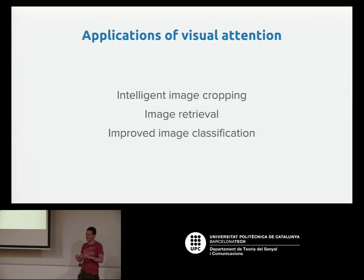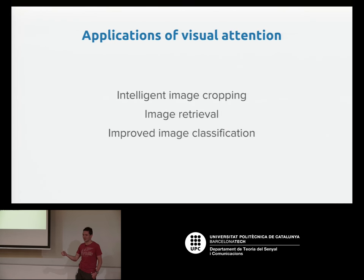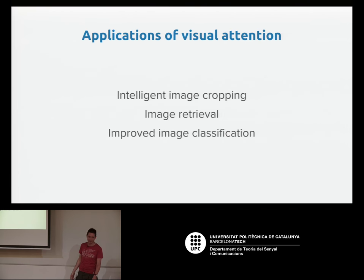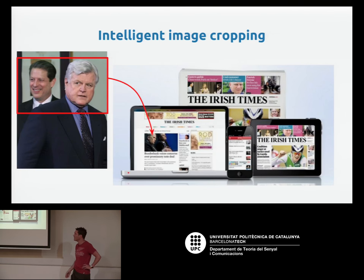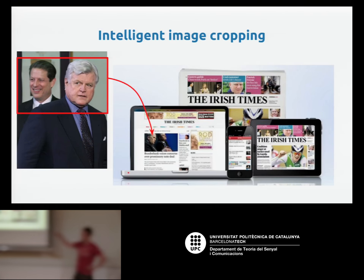There's a whole area now where people are competing to top these benchmarks, but I think what's more interesting is: what can we actually do with all of this? Just getting 0.01 better on a benchmark — is that a lot of effort for nothing? Are the models good enough already to do something interesting with? So I want to talk about some of the applications. One of the first we looked at was intelligent image cropping — it seems like the most obvious thing to do and it works quite well. We did this in conjunction with the Irish Times, a newspaper in Ireland.